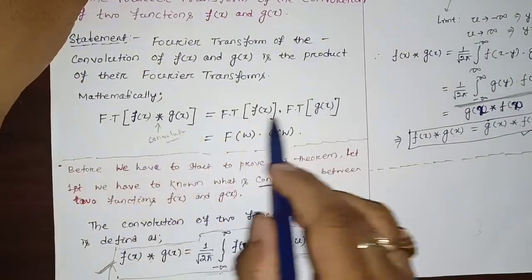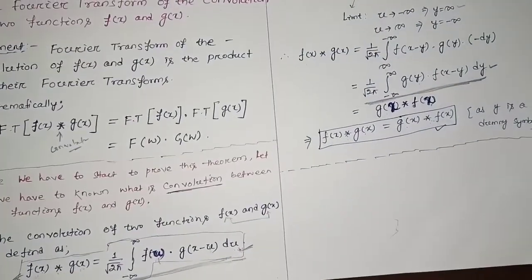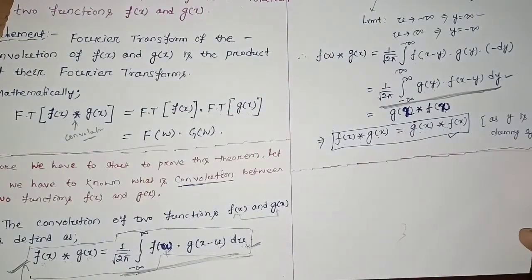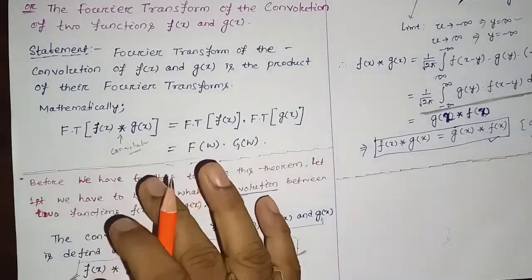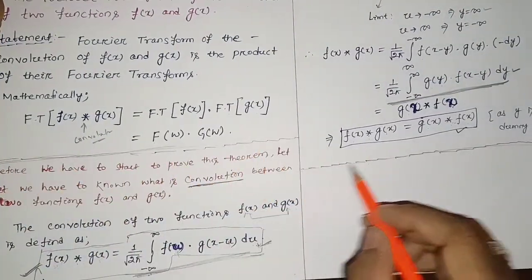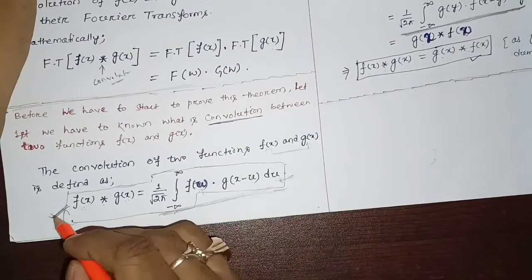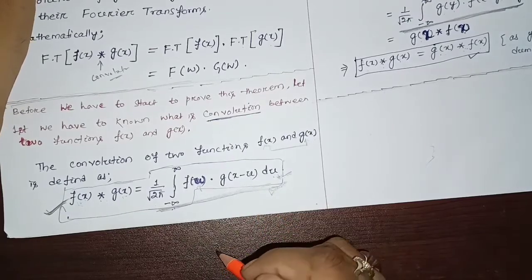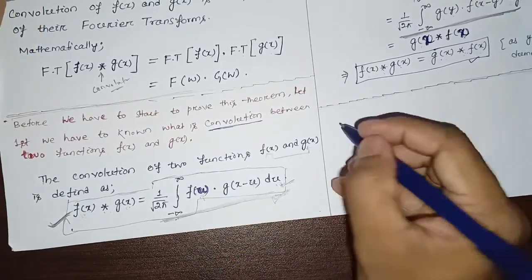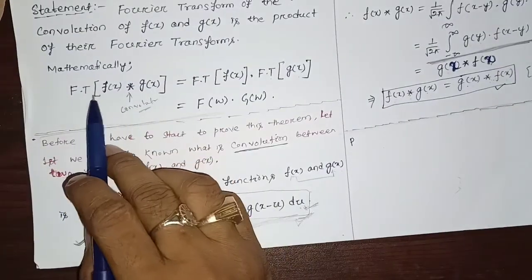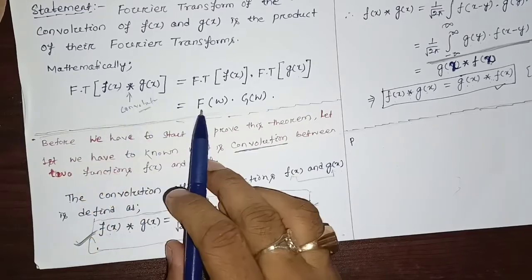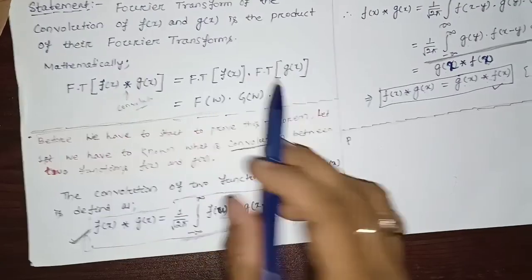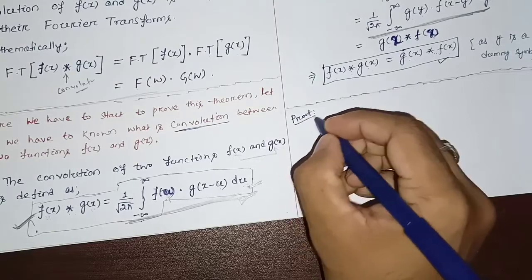Now we are going to start to prove the theorem. Note that the commutativity part is extra — write it in your notes but you need not write it in your exam, as it is common knowledge. We want to prove that the Fourier transform of the convolution of f(x) and g(x) equals the Fourier transform of f(x) times the Fourier transform of g(x).